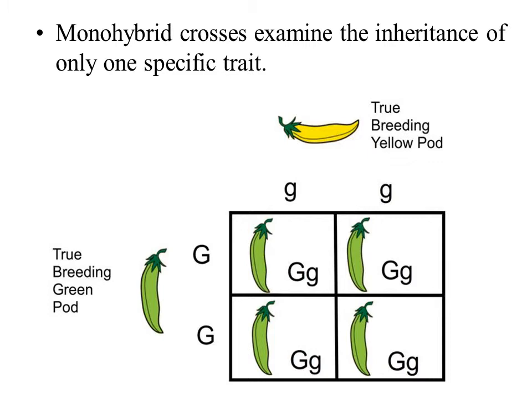This brings us back to Mendelian genetics and his crosses. A monohybrid cross will examine the inheritance of only one specific trait. A dihybrid cross would examine two traits and a trihybrid three.